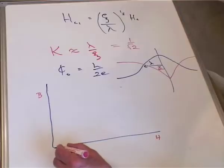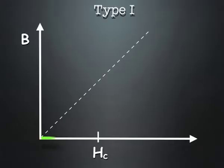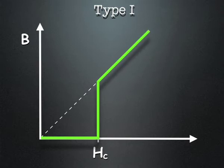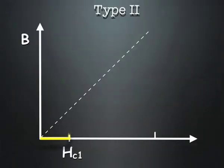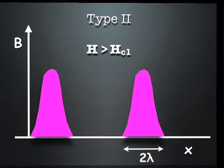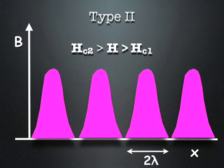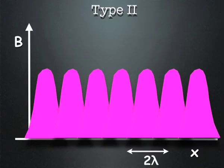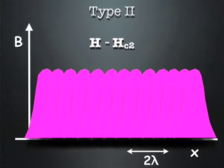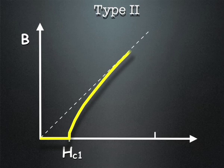For a Type 1 superconductor, the induction stays at zero up to the critical field Hc, and then the superconductor goes normal and the induction equals H. But in a material for which kappa is greater than 1 over root 2 — a Type 2 superconductor — flux is excluded up to a lower field Hc1. Then quantized flux vortices begin to enter the superconductor until the vortices are so close together that their cores begin to overlap, corresponding to Hc2, the upper critical field.